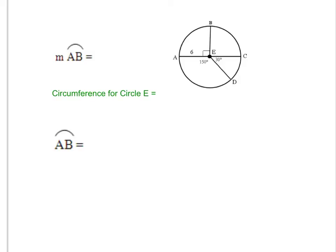In this video we are going to practice working with measure of arcs versus arc length. We have a picture of a circle and the first thing we're doing is finding the measure of arc AB. Remember, the measure of an arc is always equal to its central angle. Angle AEB is a 90-degree angle, as we can see from the marking, so the measure of arc AB is 90 degrees.